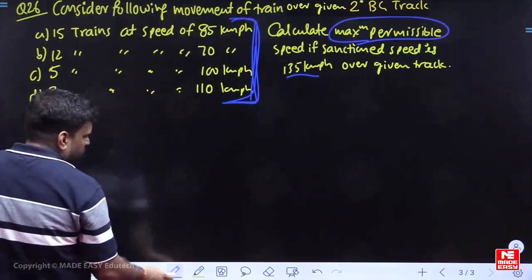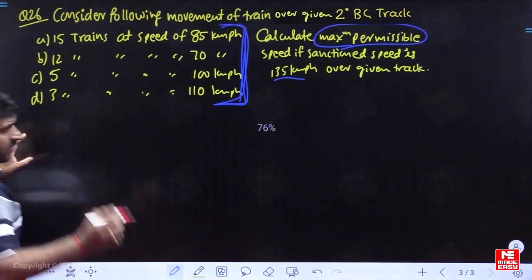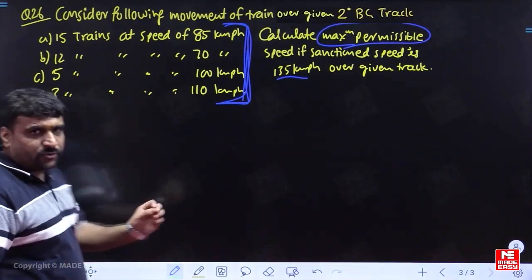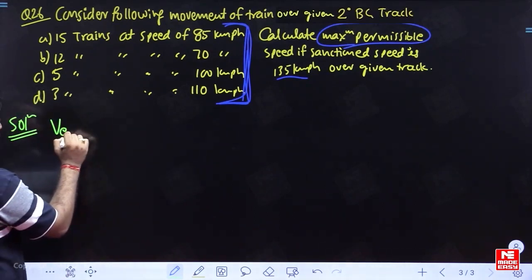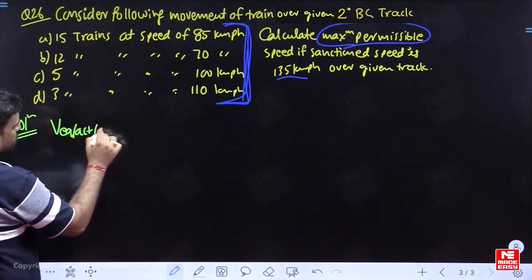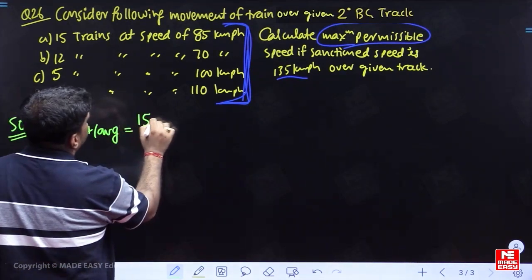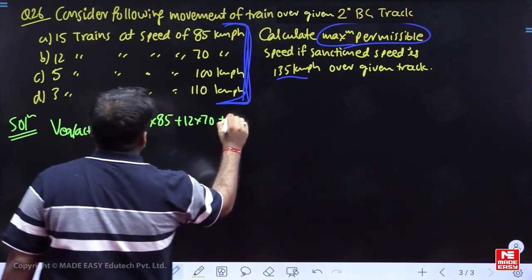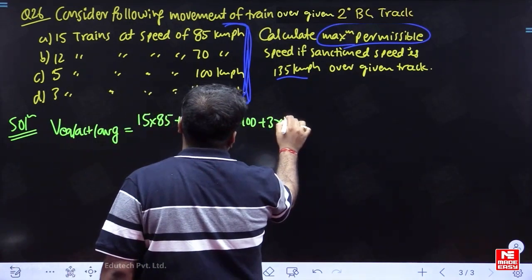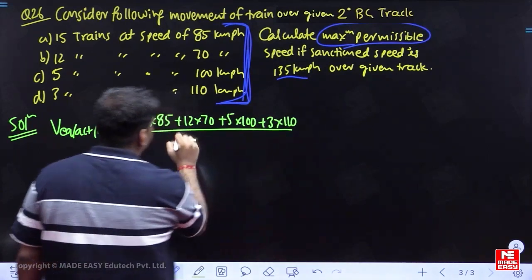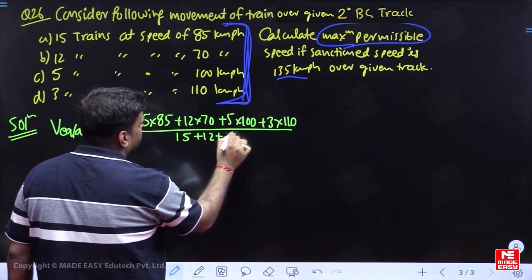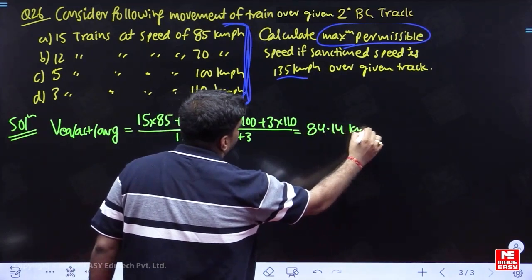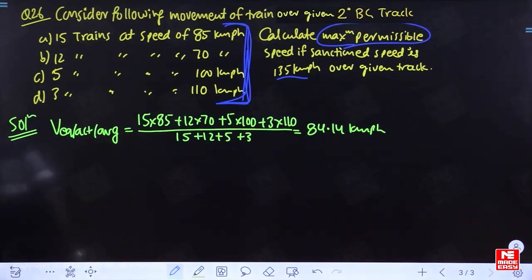Now, a very nice question. First of all, what is V-average or V-equilibrium or V-actual? That is the average: 15 trains running at 85 kmph, 12 trains at 70 kmph, 5 trains at 100 kmph, 3 trains at 110 kmph, divided by total number of trains. This is just a weighted average — simply weighted average. This comes out to be 84.14 kmph.